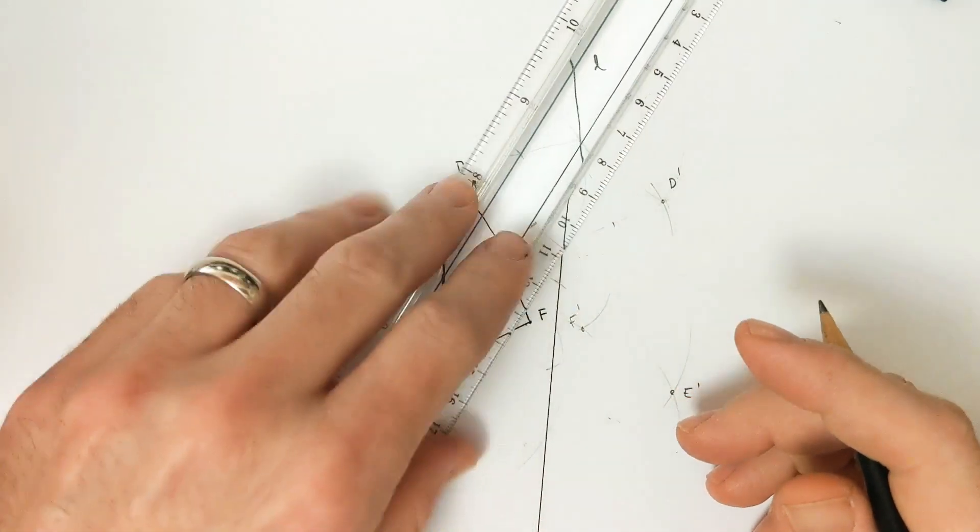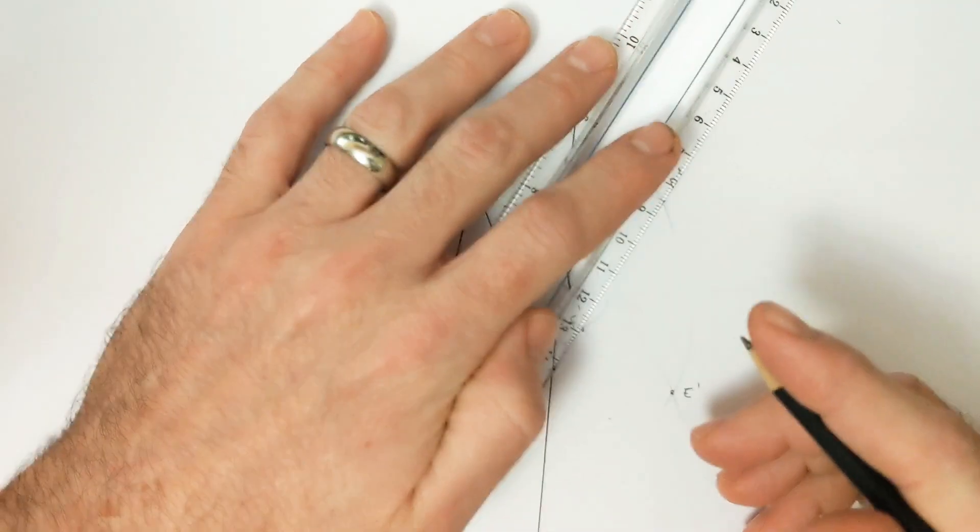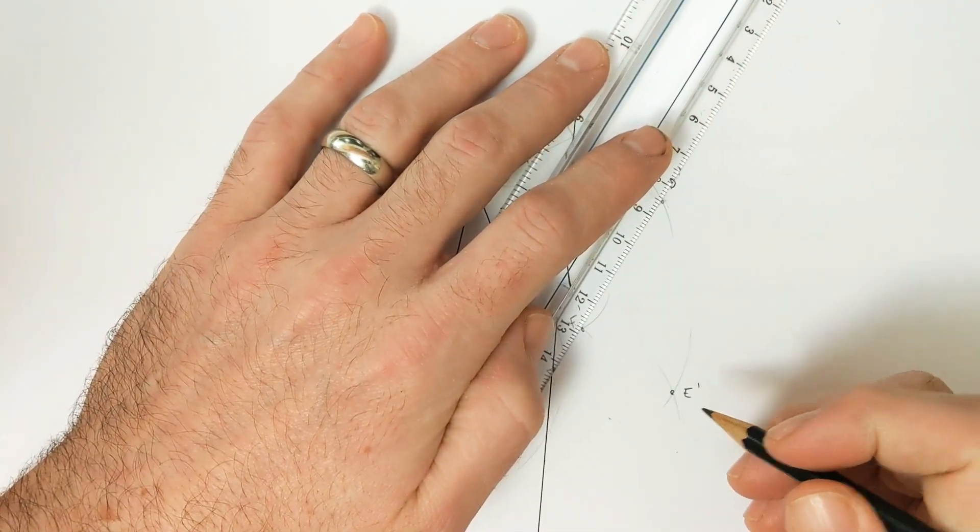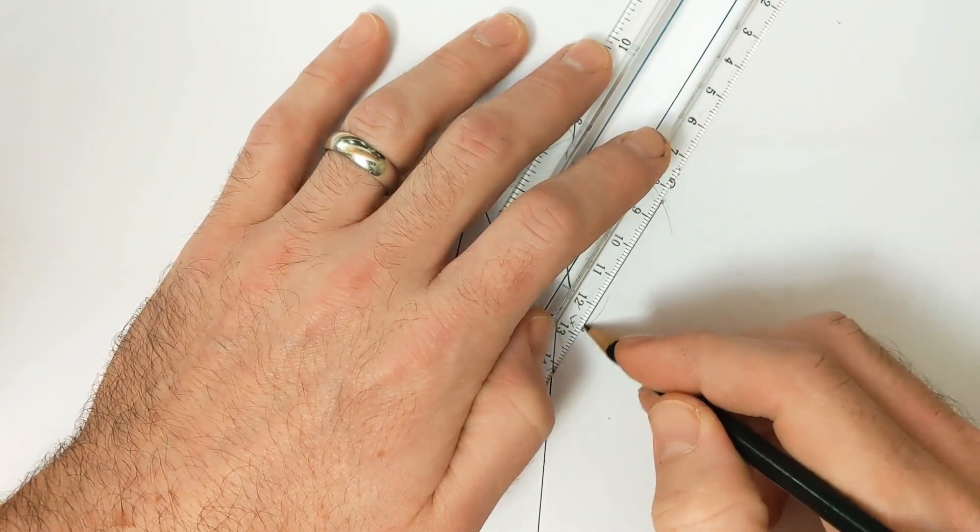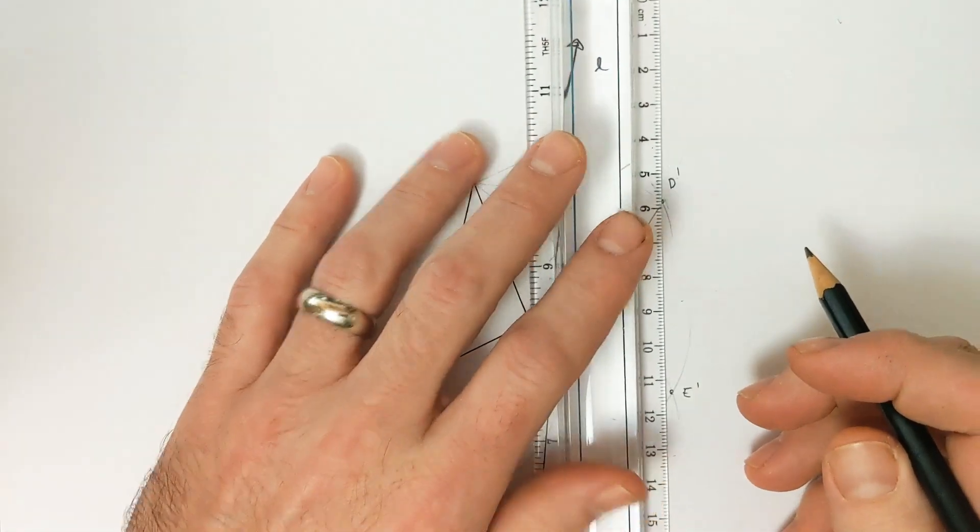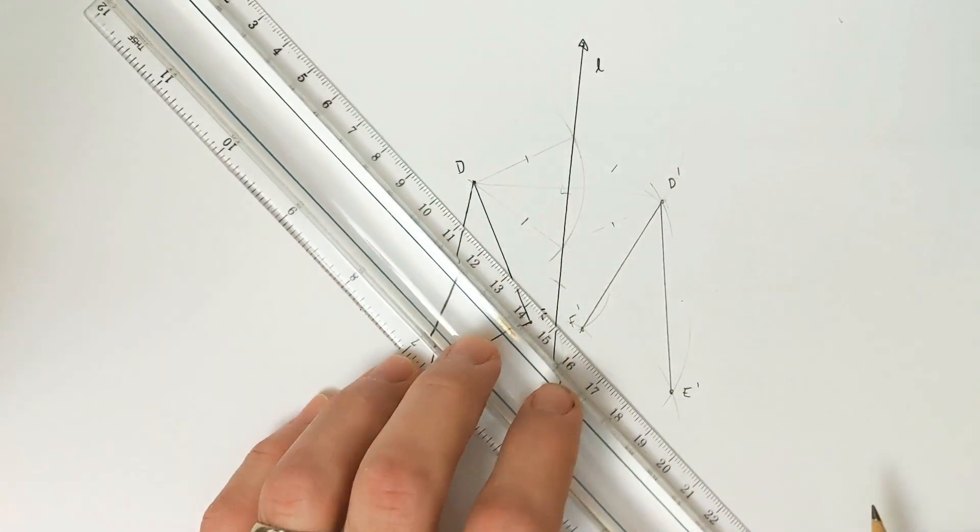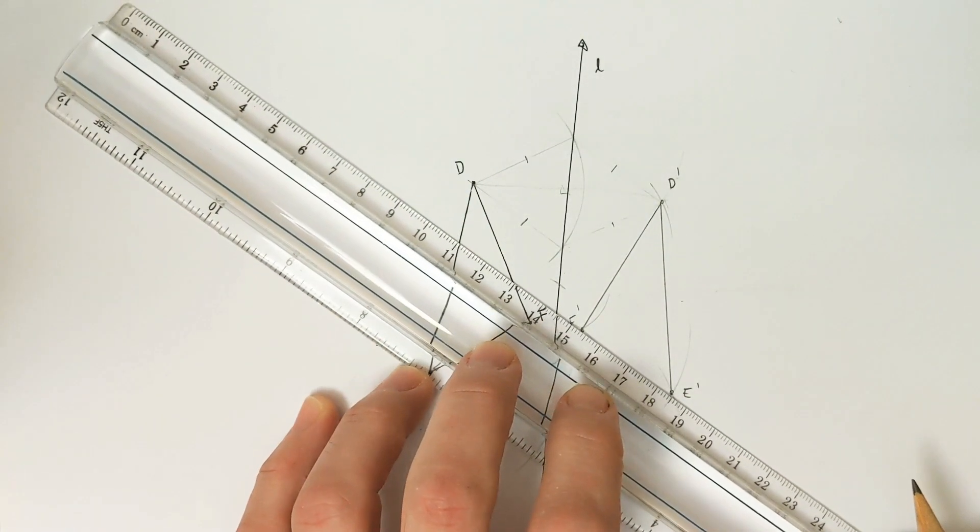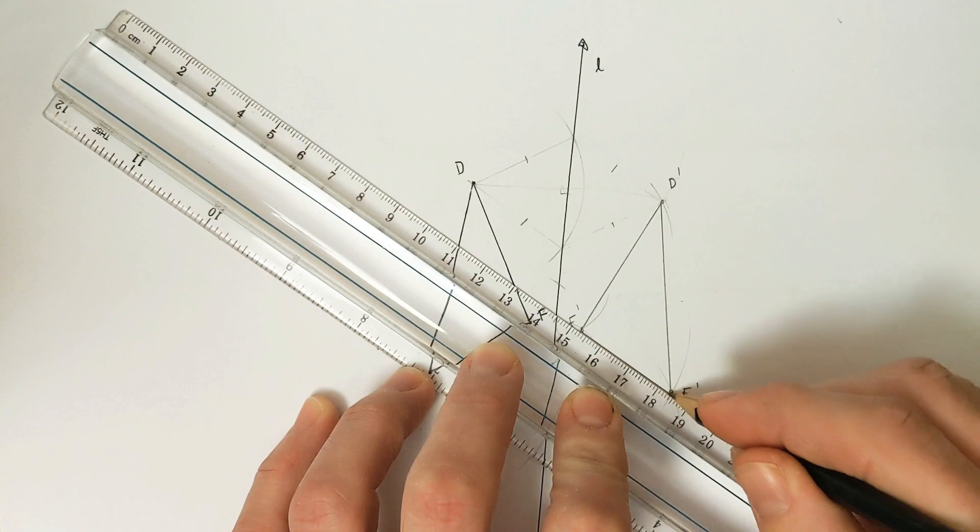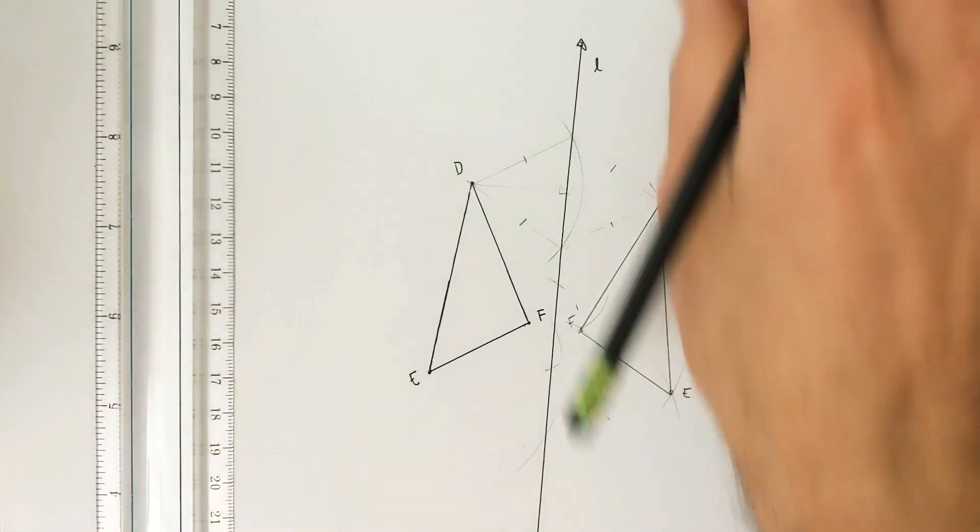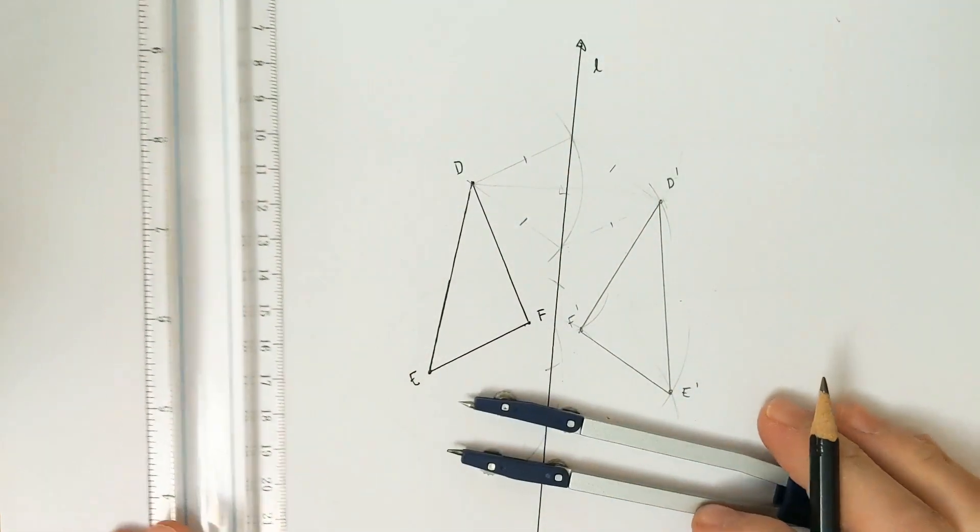So there you go. And then we, of course, reconnect all of our points back in the same order. And there is our reflection constructed with just a compass and straight edge.